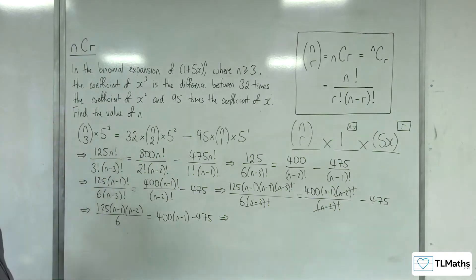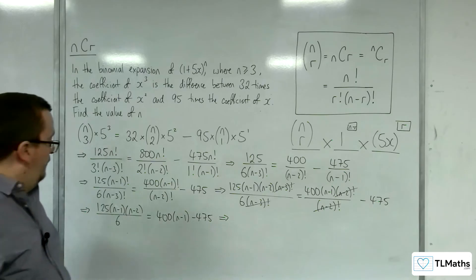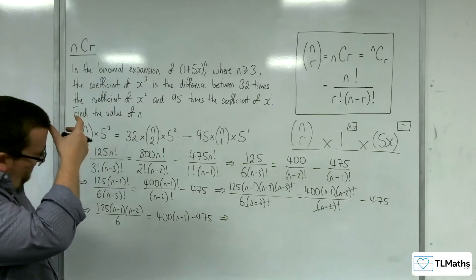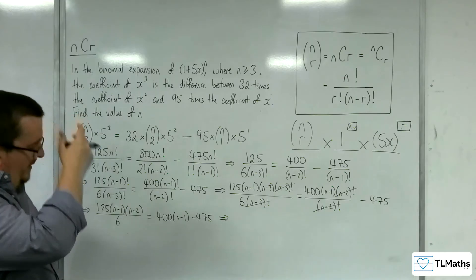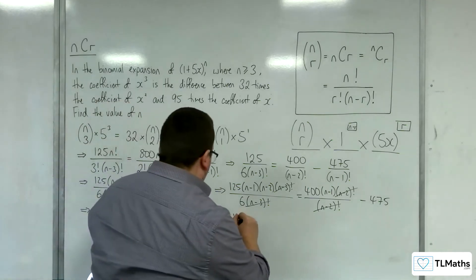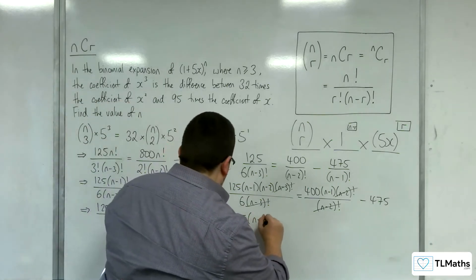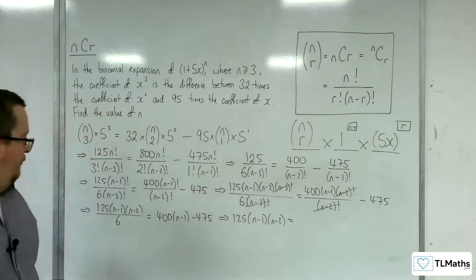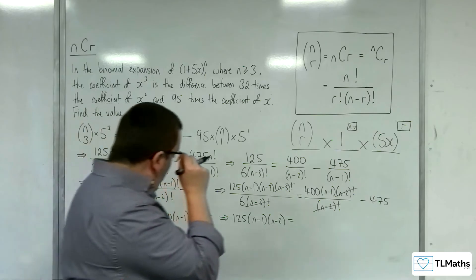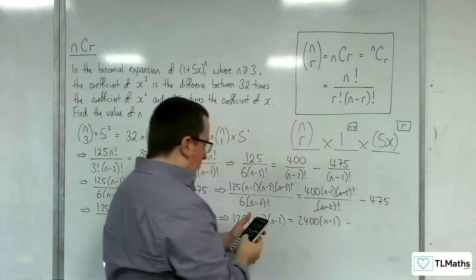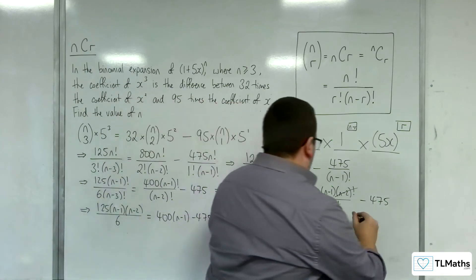Right, now I can multiply through by the 6. I could also divide through by the 5 as well, I mean I could multiply through by 6 fifths, let's just multiply through by the 6. Don't want to do too many things at once. Right, 6 lots of 400 is 2,400, and we've got 6 lots of 475, which is 2,850.